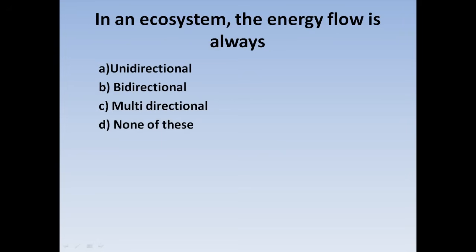Next question: In an ecosystem, the energy flow is always — Option A: Unidirectional, Option B: Bidirectional, Option C: Multidirectional, Option D: None of this. Energy flow in an ecosystem is always unidirectional. Correct answer: Option A.